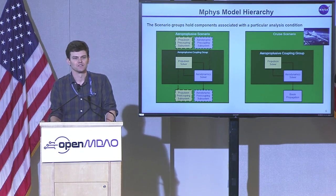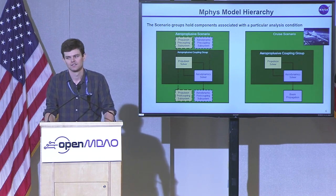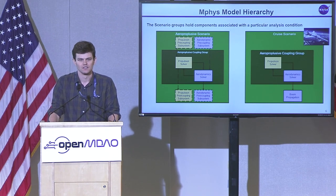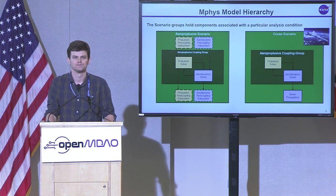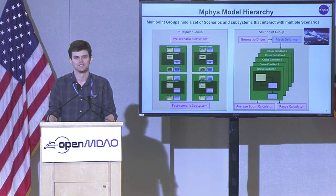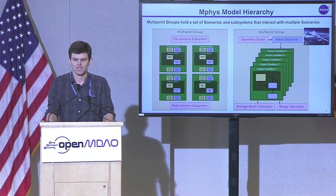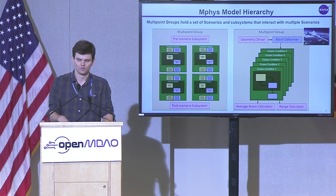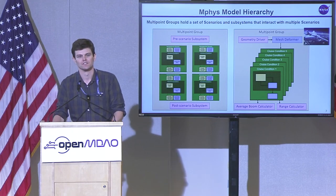Here's an aeropropulsive scenario example. We have our core coupling group, and within MFIS we have the ability for solvers to provide something that happens before or after the coupling group — pre and post coupling subsystem options. For the X-59, maybe you're interested in the boom signature: you do your aeropropulsive coupling, feed that result to a post-coupling boom propagation tool, and use that for your objective or constraint. For multi-point optimization, you take your scenarios, stack them up, with components before or after in the multi-point group — geometry driving the shape of the vehicle, deforming the CFD volume mesh, forming the volume mesh at each scenario, and then computing constraints or objectives after the scenarios have run.